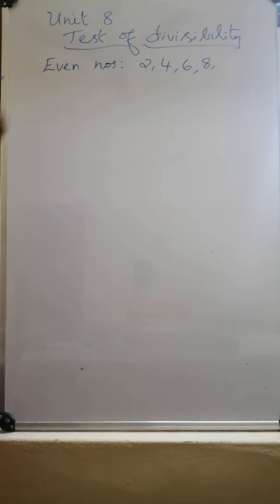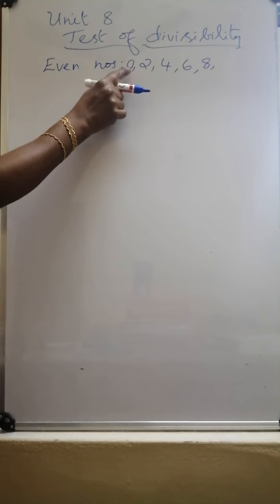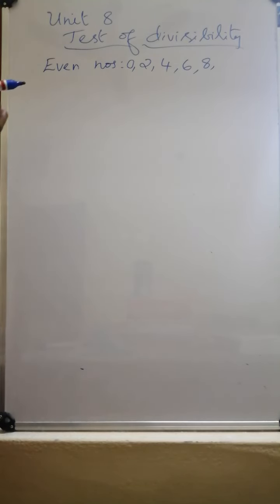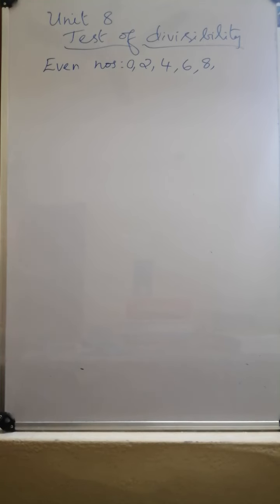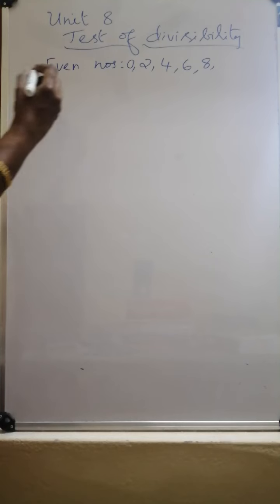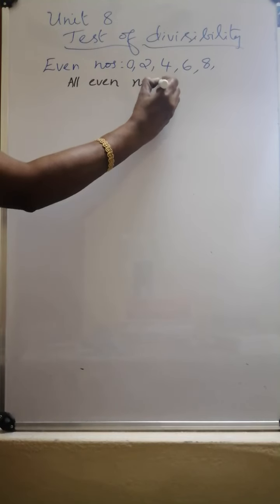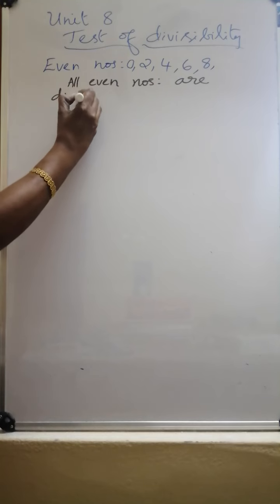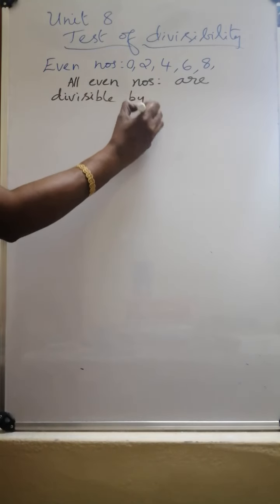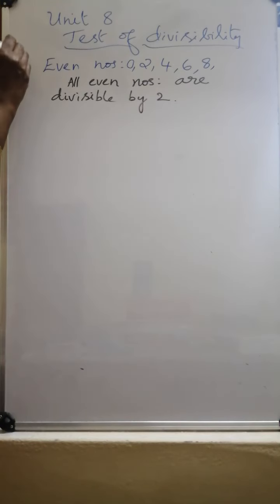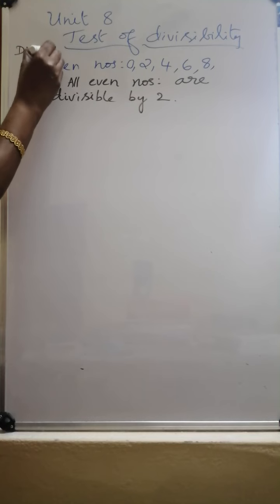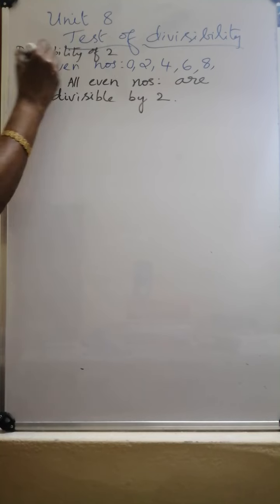So all the numbers which are ending with 0, 2, 4, 6, or 8 are divisible by 2. That means all the even numbers are divisible by 2. So whenever you come across an even number, you should understand that number is divisible by 2.